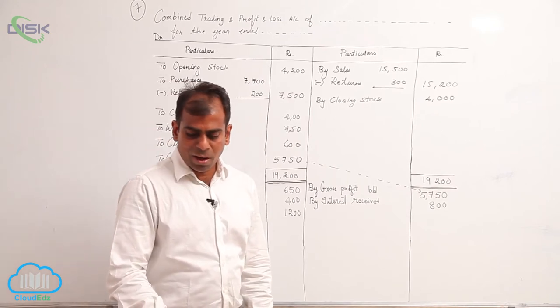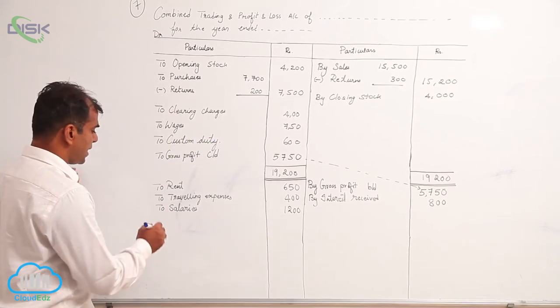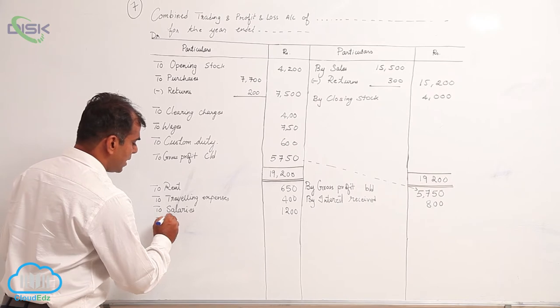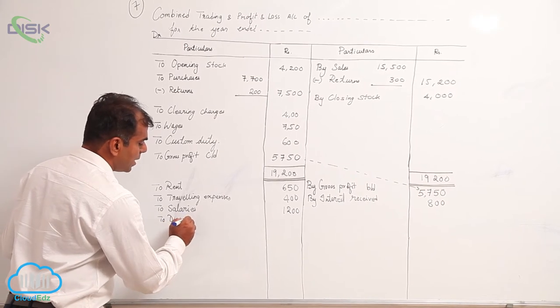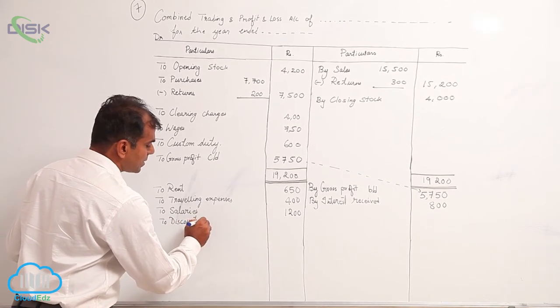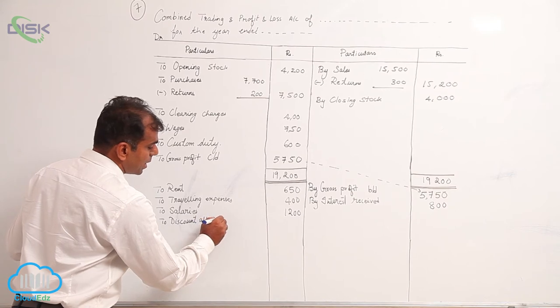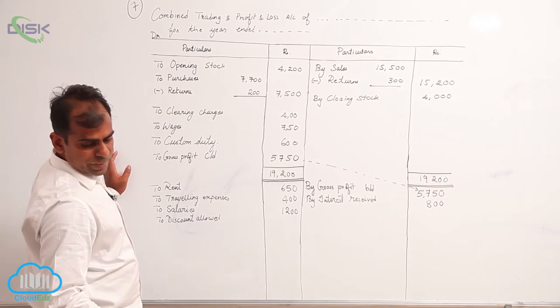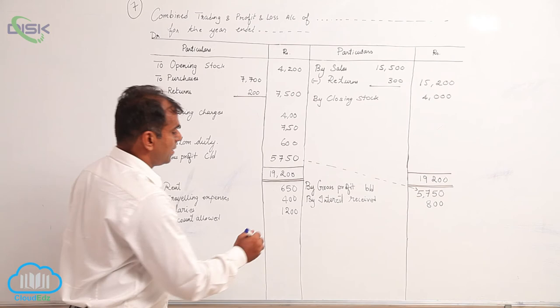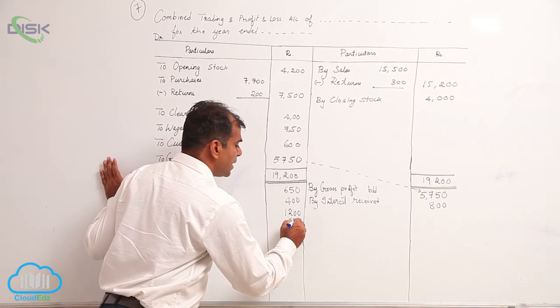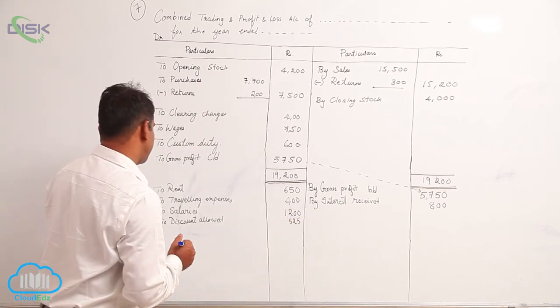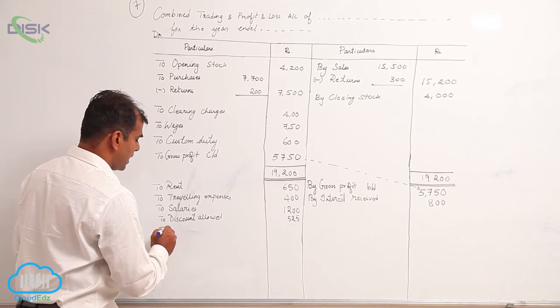Now next item is your discount allowed. Again, it's a loss, on the debit side we take. So discount allowed, the amount of rupees 525.